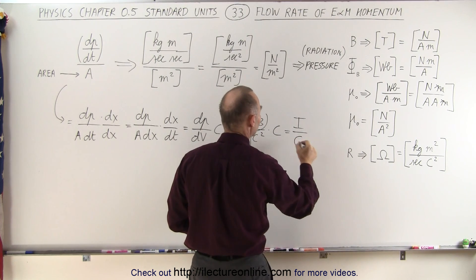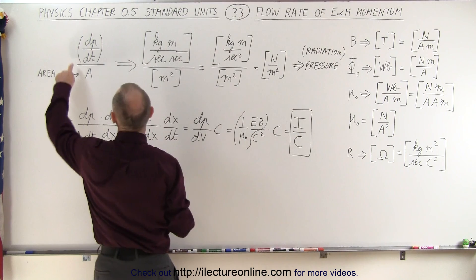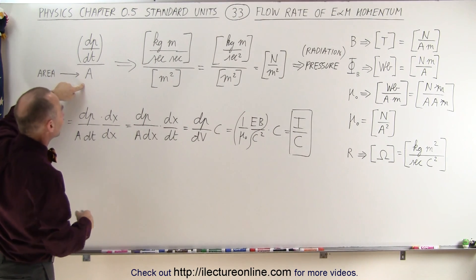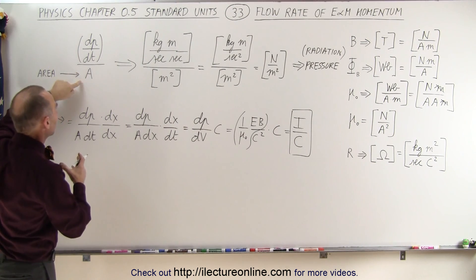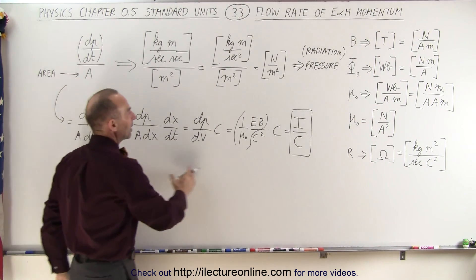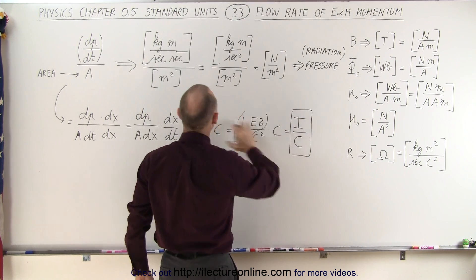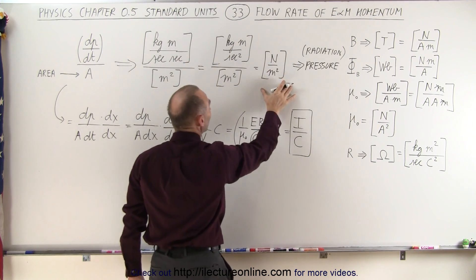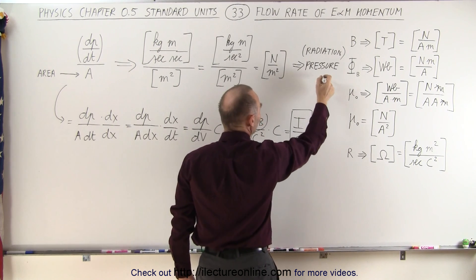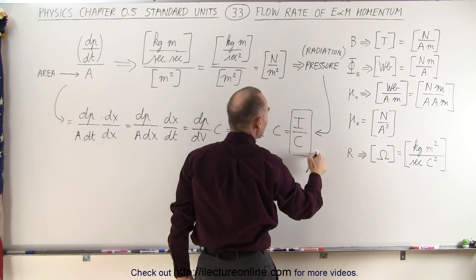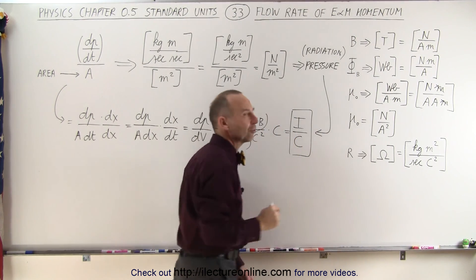And this is equal to the dp/dt per unit area—in other words, the flow rate of the momentum per unit area of electromagnetic radiation, which can be written as the intensity of the radiation divided by the speed of light. Which, via the units, we were able to show that this was equal to the radiation pressure. So the radiation pressure must be equal to the intensity of the electromagnetic radiation divided by the speed of light.